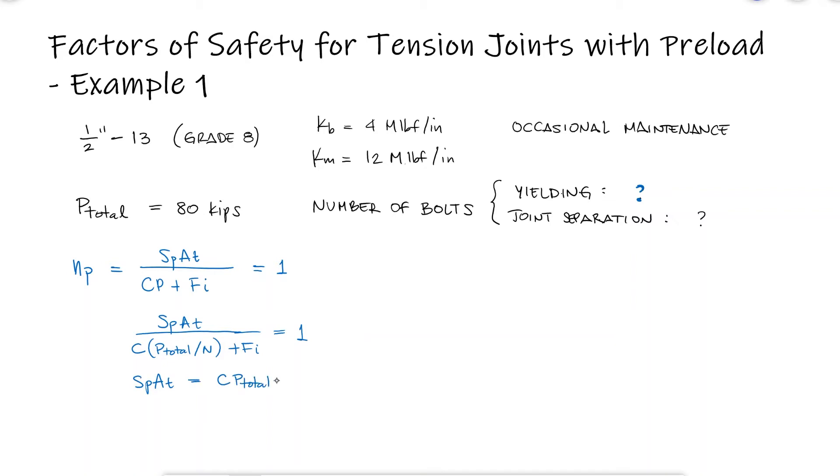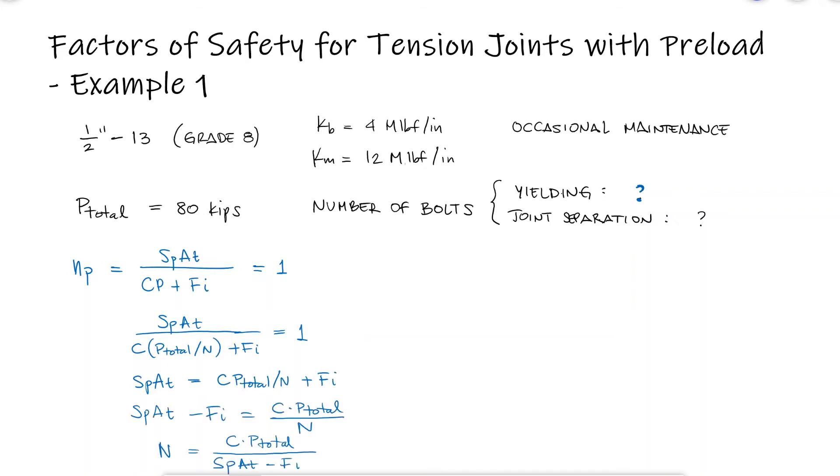Solving for the number of bolts, we see that we need the proof strength, the tensile stress area AT, the preload FI, and the stiffness constant of the joints C.